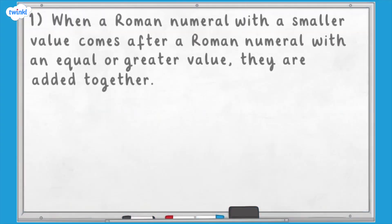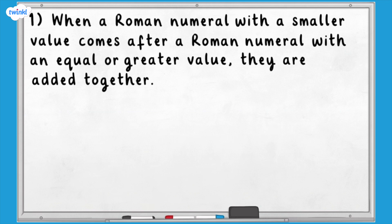We can combine these seven letters to create any whole number in Roman numerals, but there are rules that we have to follow. When a Roman numeral with a smaller value comes after a Roman numeral with an equal or greater value, they are added together.